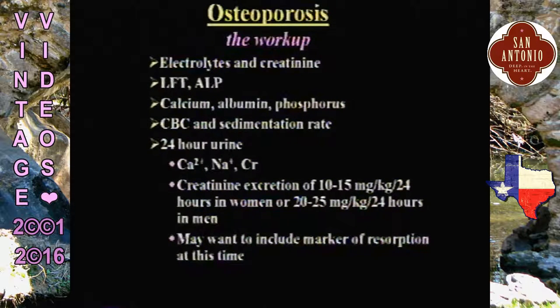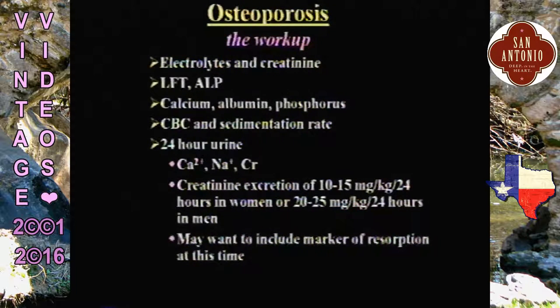I tend to do a 24-hour urine collection to assess calcium balance. If calcium in the urine is too low — my cutoff is less than 100 — I push on increasing calcium intake, whether by diet or supplements. History and physical is always important, looking for subtle endocrine causes or other causes that can lead to bone loss.